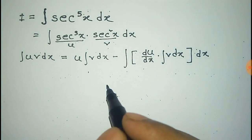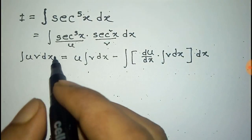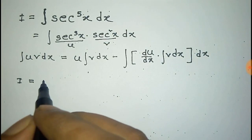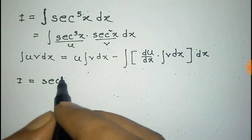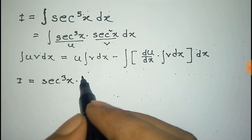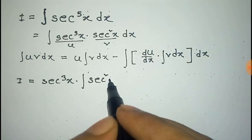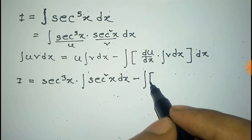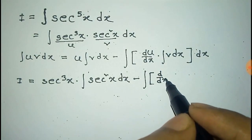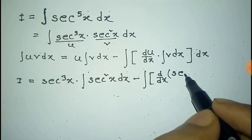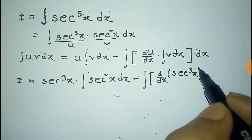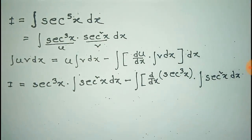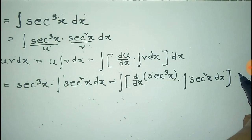This is the formula and we apply it to our main integration. Taking u equal to sec cubic, the integration would be sec cubic into the integration of sec square x dx, minus the total integration of the derivative — that is d/dx of sec to the power 3x — into the integration of sec square x dx.